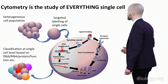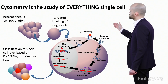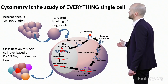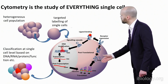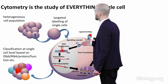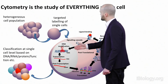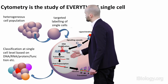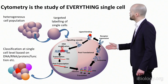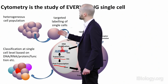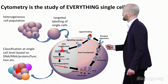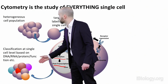Cytometry is very much the measurement of everything at the single cell level. Using cytometry, we can measure the whole flow of information right through the single cell — from receptor expression, to binding of a ligand, to measuring signaling cascades, looking at phosphorylation, DNA modification, RNA transcription, and post-translational modification. We take our unknown cell population, potentially label them, ask all these different questions, and put this back into the context of the wider population.